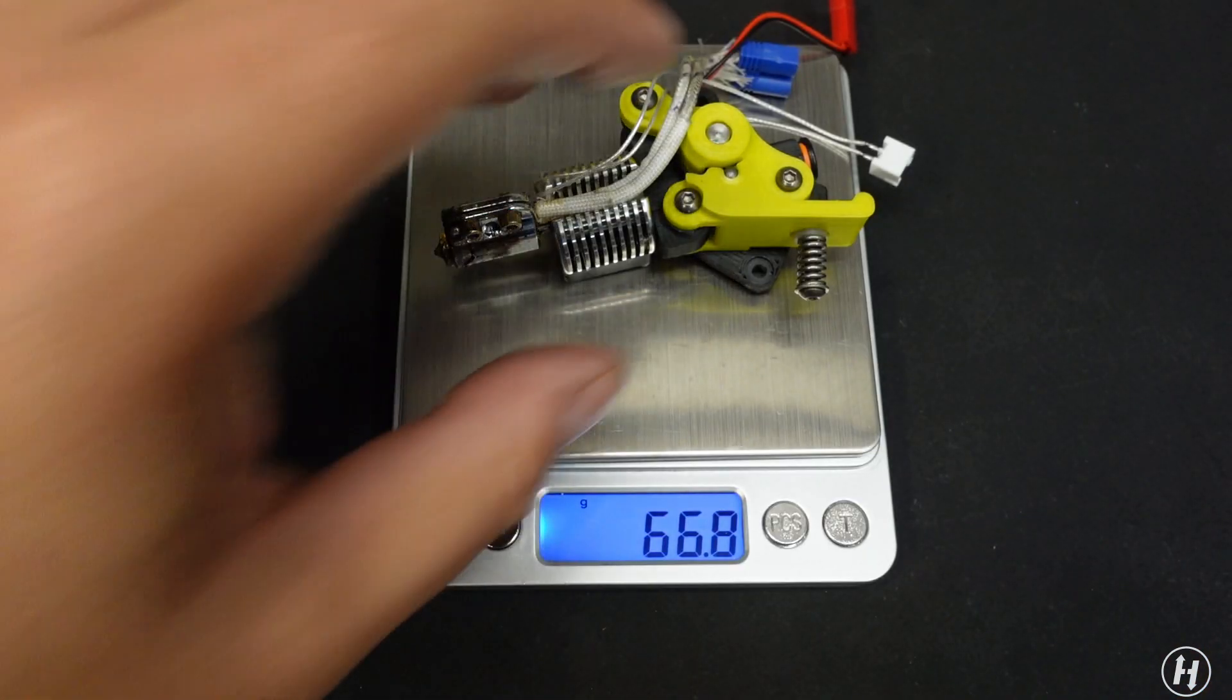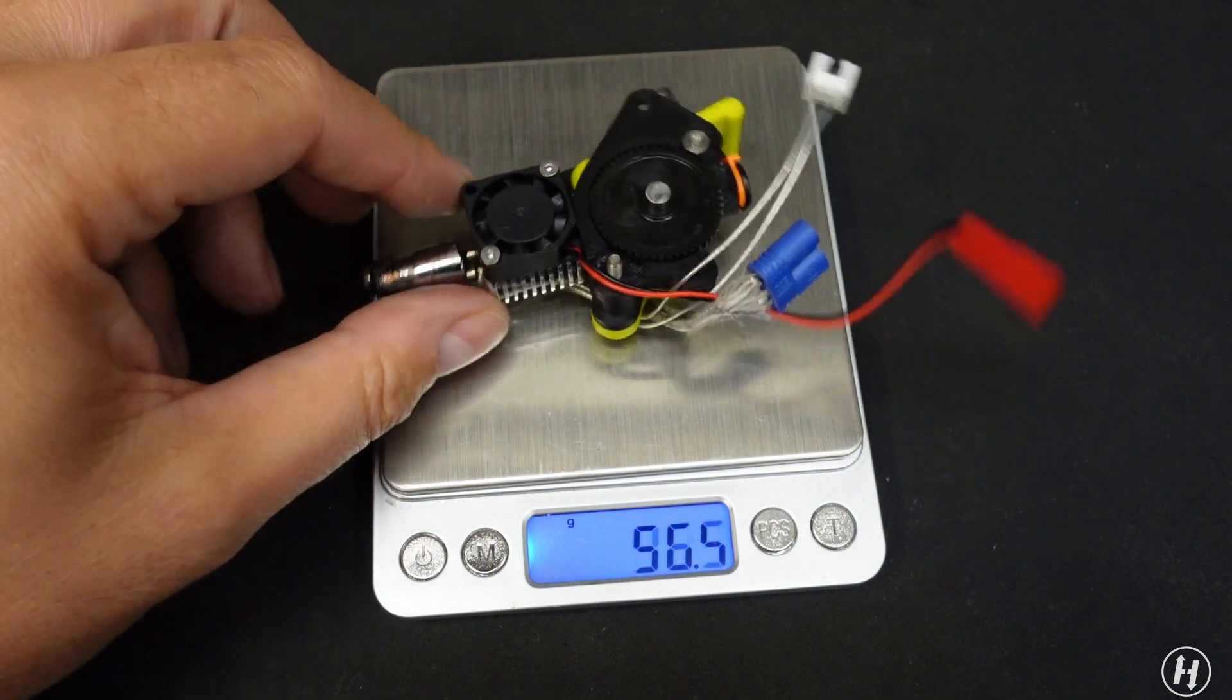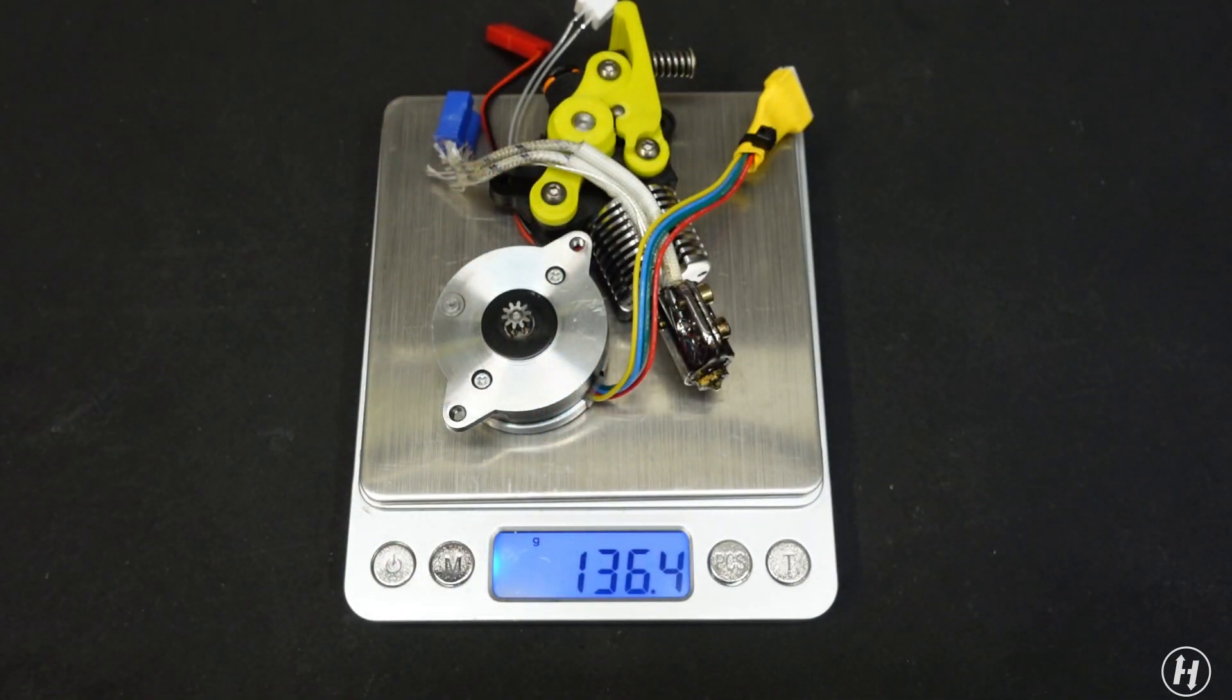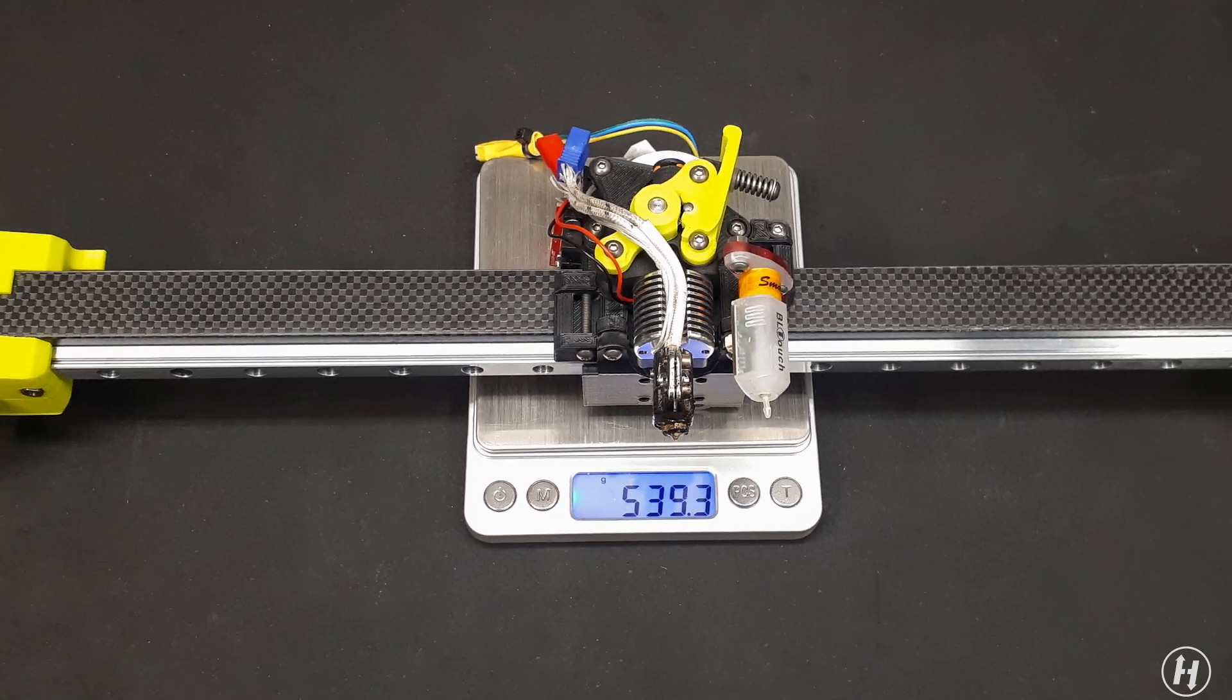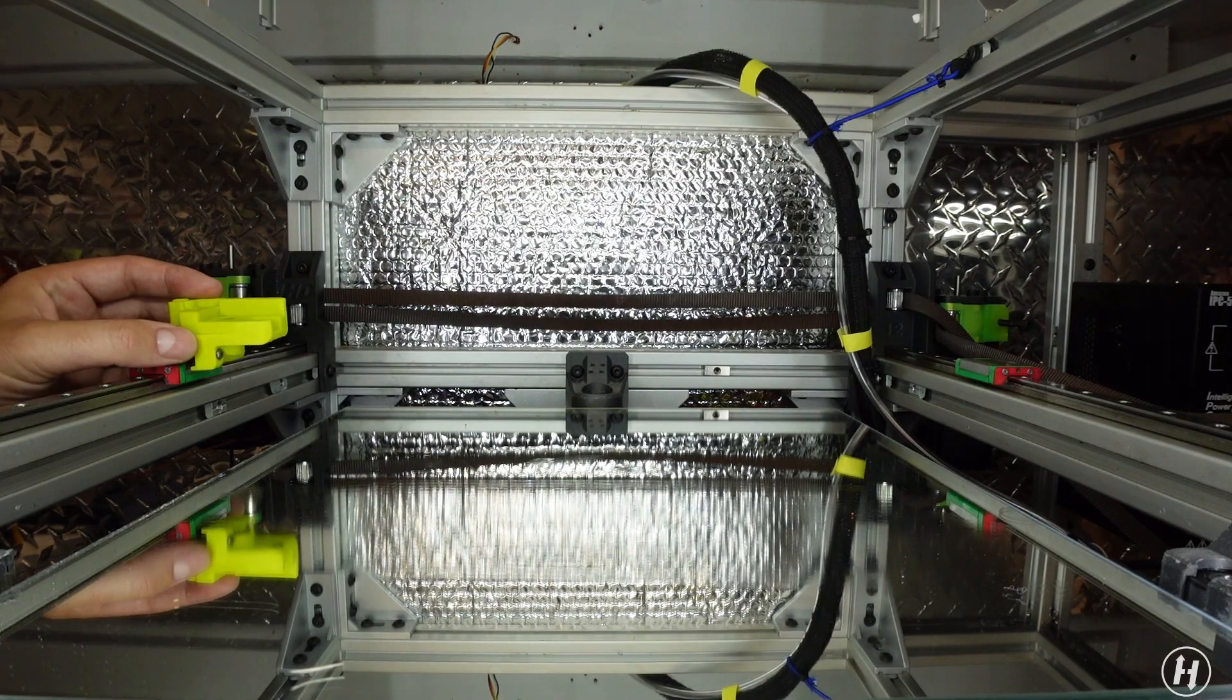Here comes the extruder and hotend assembly. I just can't get my head around how that thing is light. The new weight of this complete X assembly is just under 540 grams. Let's put this on the machine.